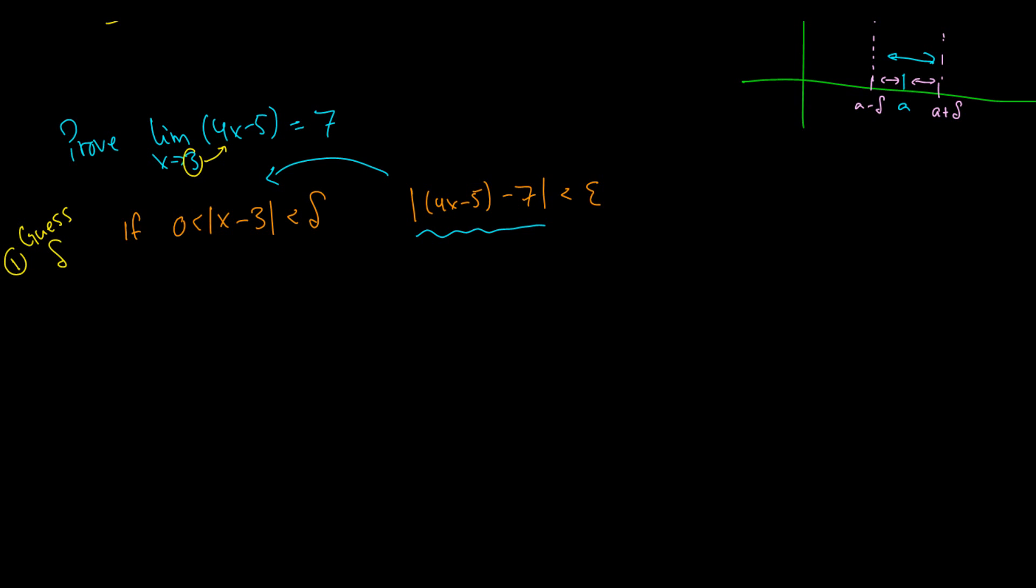Okay, so this also means that 4x minus 12 is less than epsilon. We can factor out a 4, x minus 3 is less than epsilon, and we can divide by 4. So this is less than epsilon over 4.